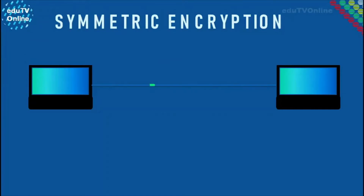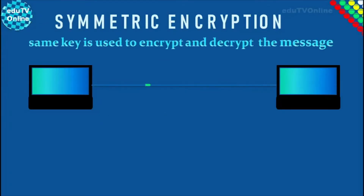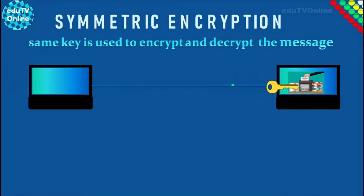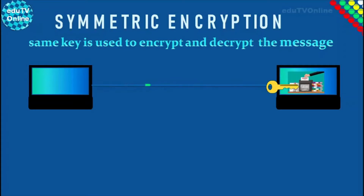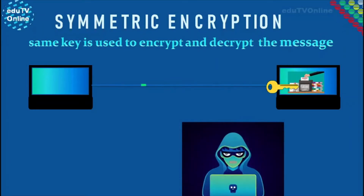In symmetric encryption, the same key is used to encrypt and decrypt the message. This means that two people with the key can share messages. The problem with this method is that anyone who obtains the key can encrypt or decrypt a message.